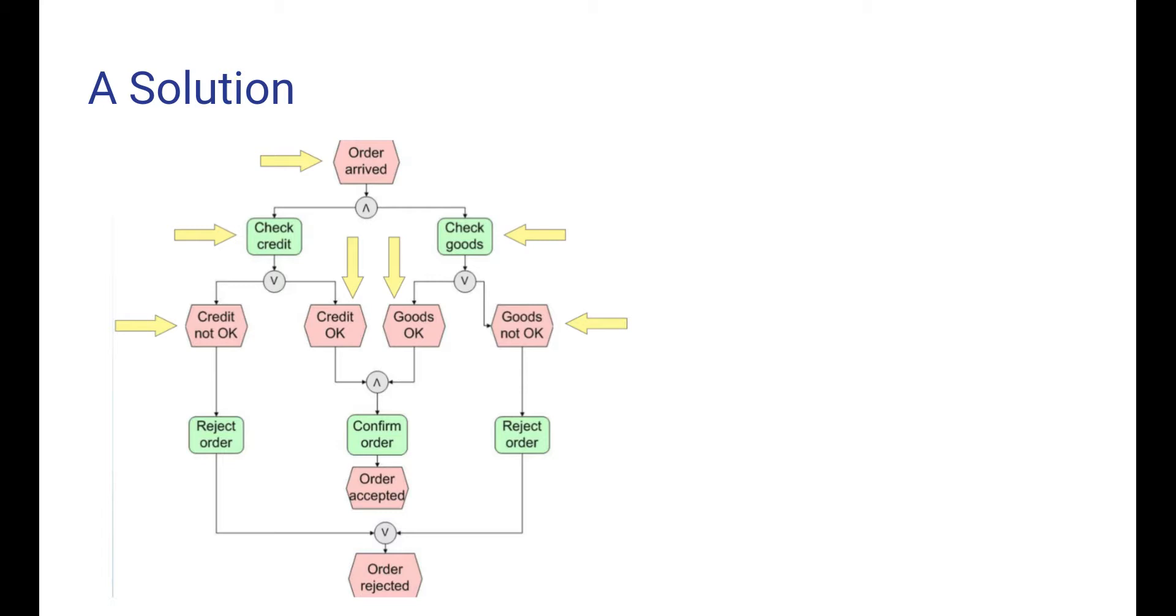One sub process is about checking the credit worthiness of the customer and the other one is about checking the availability of the goods ordered. So let's first look at the first sub process to the left. One outcome is that the credit isn't okay, if so the order is rejected and the process stops. Similarly if the goods aren't available the order will also be rejected and the process stops.